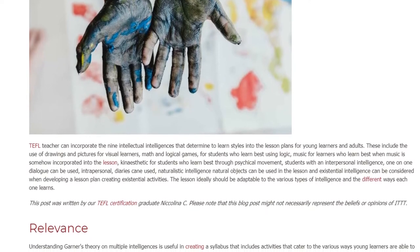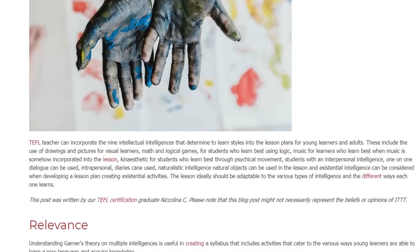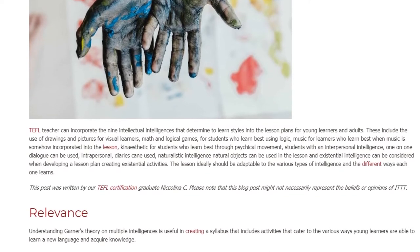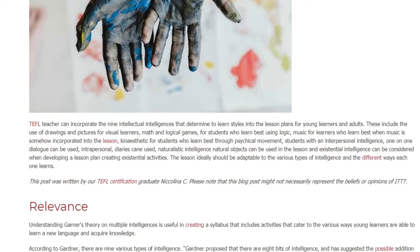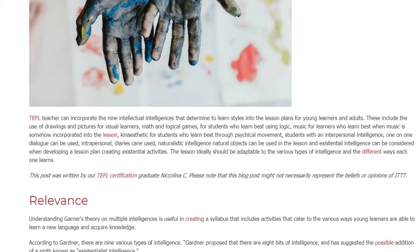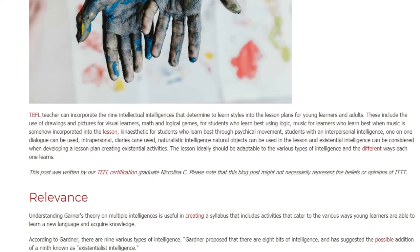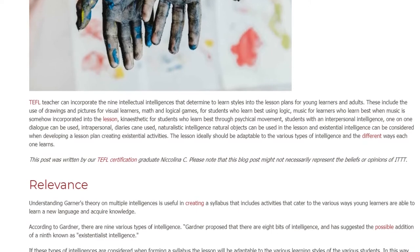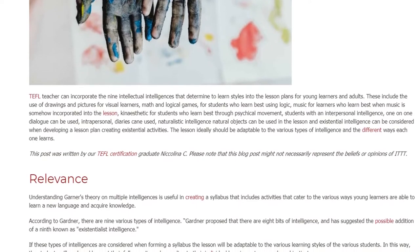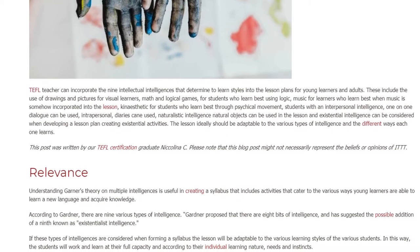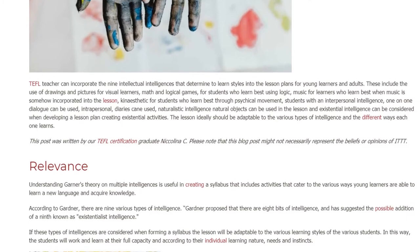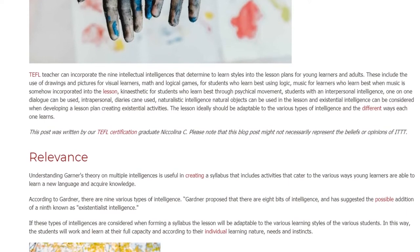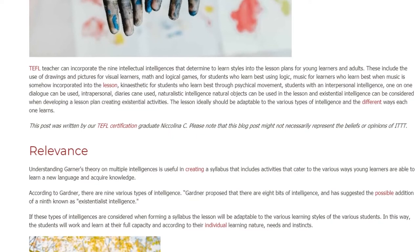For students with an interpersonal intelligence, one-on-one dialogue can be used. For intrapersonal learners, diaries can be used. Naturalistic intelligence can be supported with natural objects used in the lesson, and existential intelligence can be considered when developing a lesson plan by creating existential activities. Ideally, the lesson should be adaptable to the various types of intelligence and the different ways each student learns.